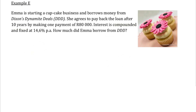Emma is starting up a cupcake business and she's borrowing money from Dixon's Dynamite Deals. She's paying back her loan after 10 years — that's N — by making a payment of 80,000 rand. Remember your payment is always going to be the original loan plus interest, so it's an A value. The interest is compounded and fixed at 14.6% per annum — this is the first problem where we're dealing with compound interest.